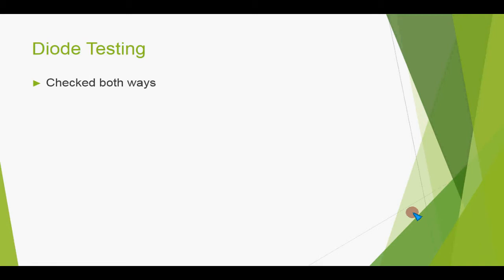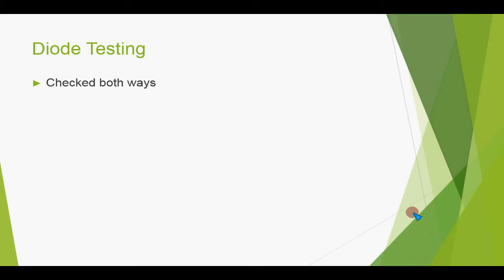We use the red or positive terminal on the anode of the diode and the black or negative terminal on the cathode of the diode — that would be the forward bias configuration — and we will also check it in reverse bias.